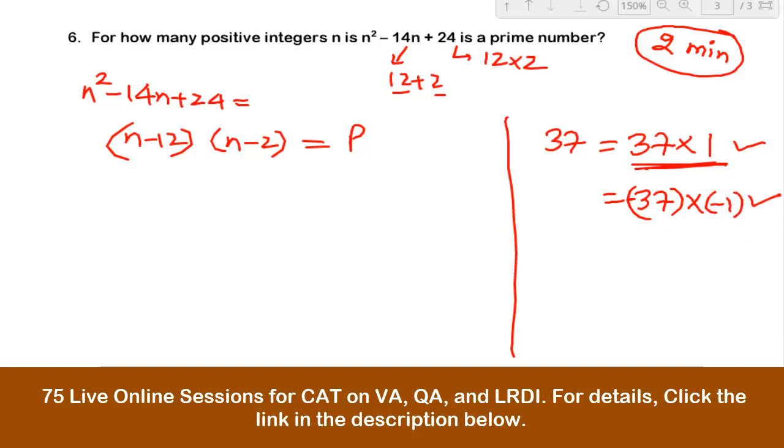So there are two ways wherein I can write any prime number as a product of two integers: one in which both are positive and one in which both are negative.